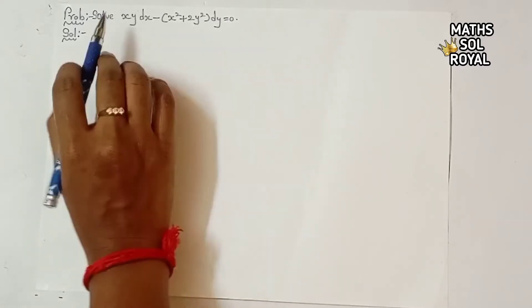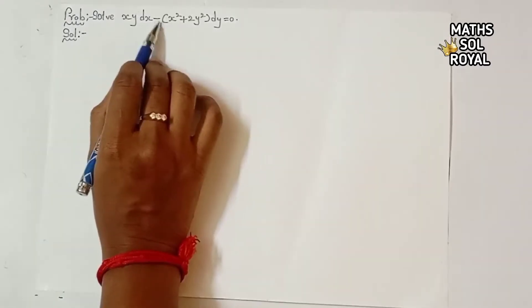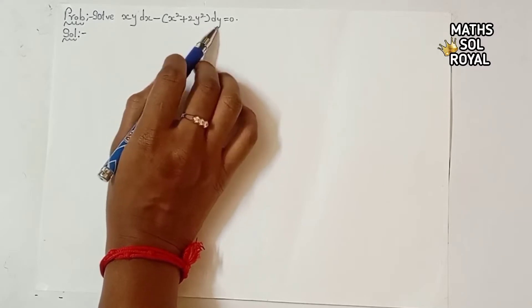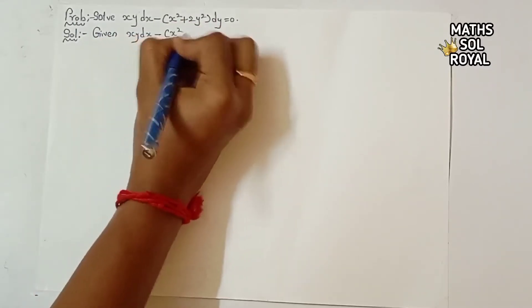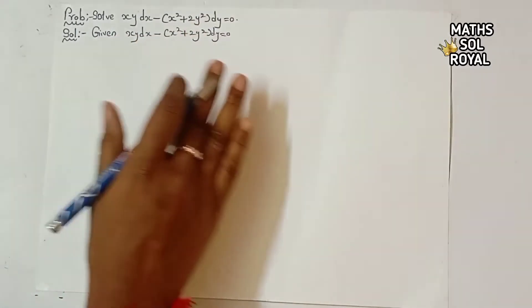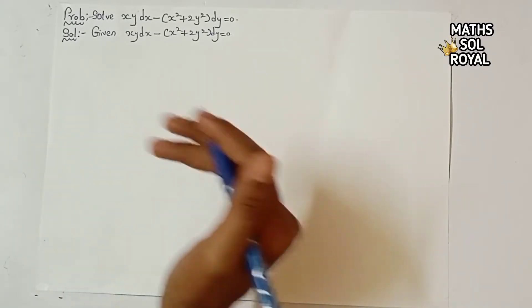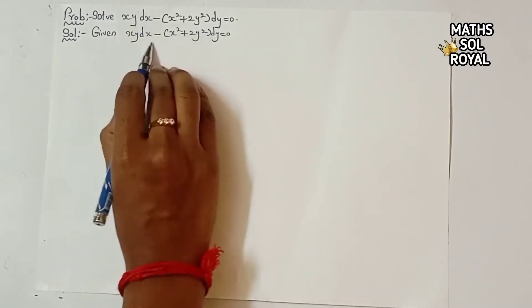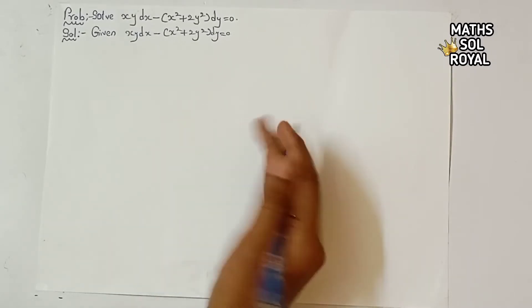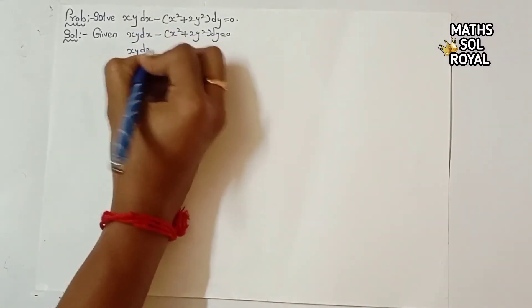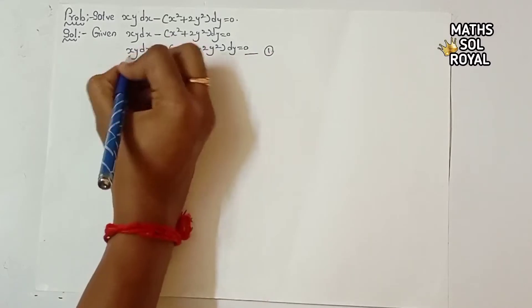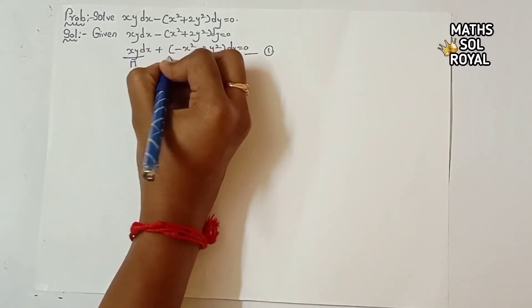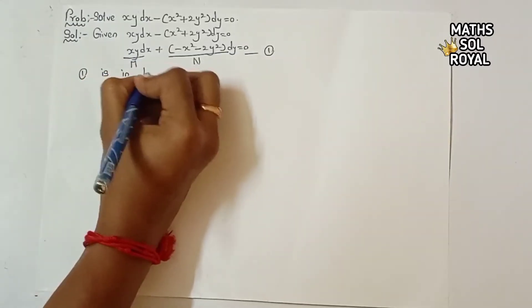Welcome to Master Royal. Let us solve the question: x·y dx minus (x² + 2y²) dy equals zero. Normally we need the formula M dx + N dy = 0. Here there is a minus, so rewriting: this is equation one, which is in the form of M dx + N dy equals zero.